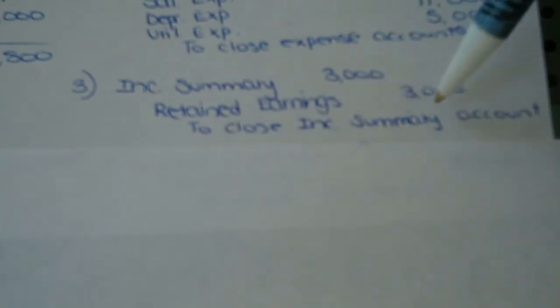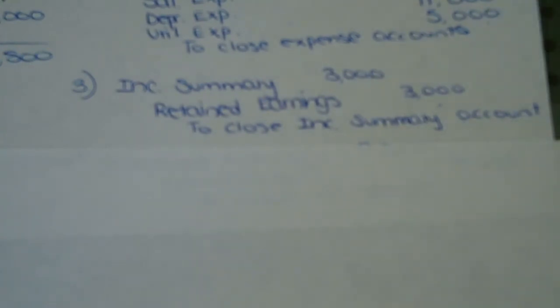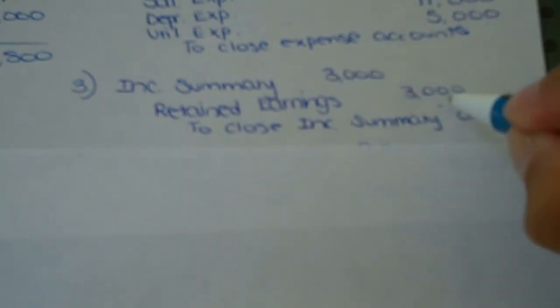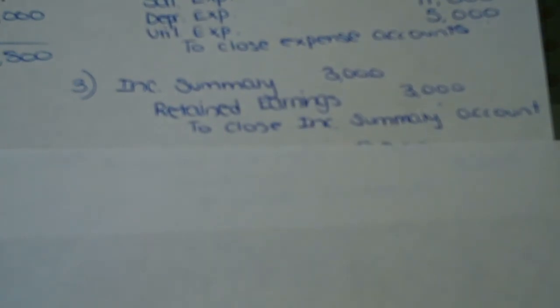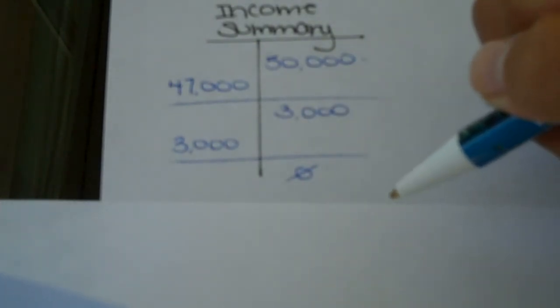There it is. Income summary — debit of $3,000 — and we move that to the company's retained earnings. Remember, the retained earnings account tracks the company's cumulative profits or losses over its life. This $3,000 represents the company's net income for the period, so it's going to increase retained earnings with that credit. And now our income summary account is zero. We want to make sure all of our temporary accounts are zero at the end of the period.